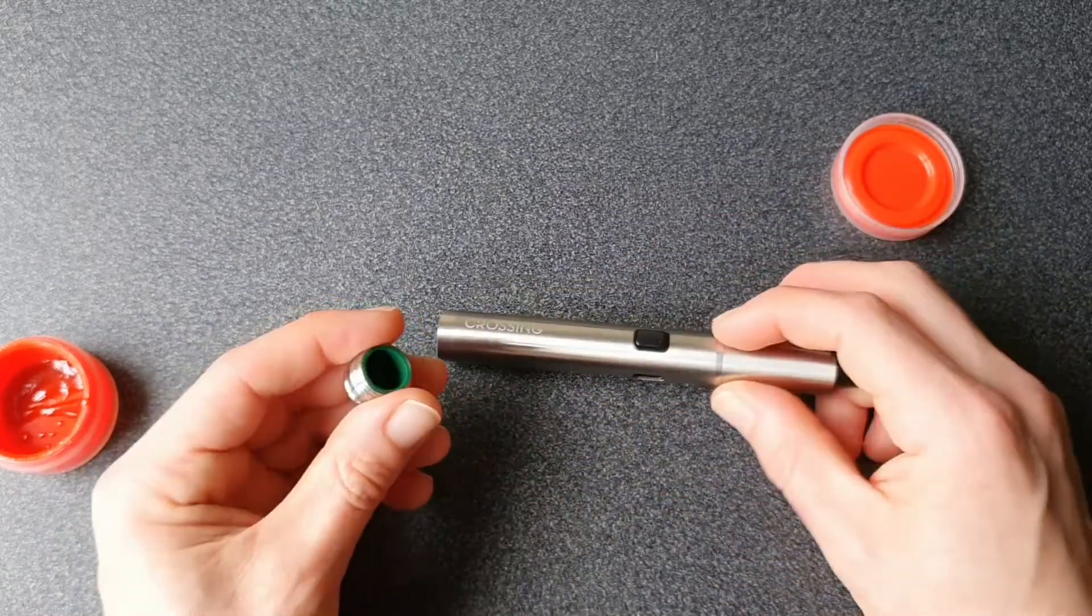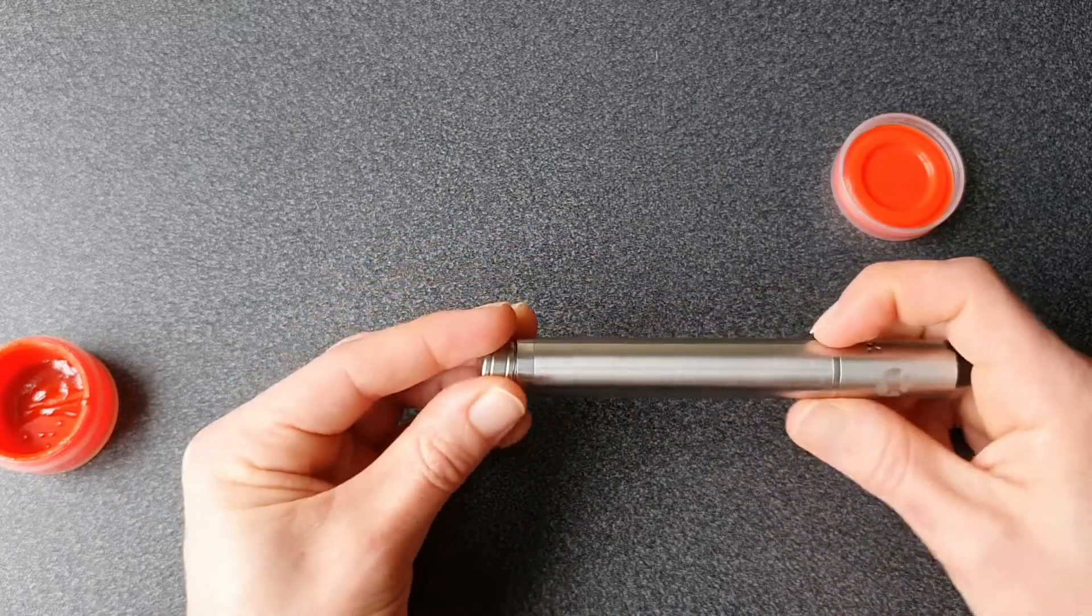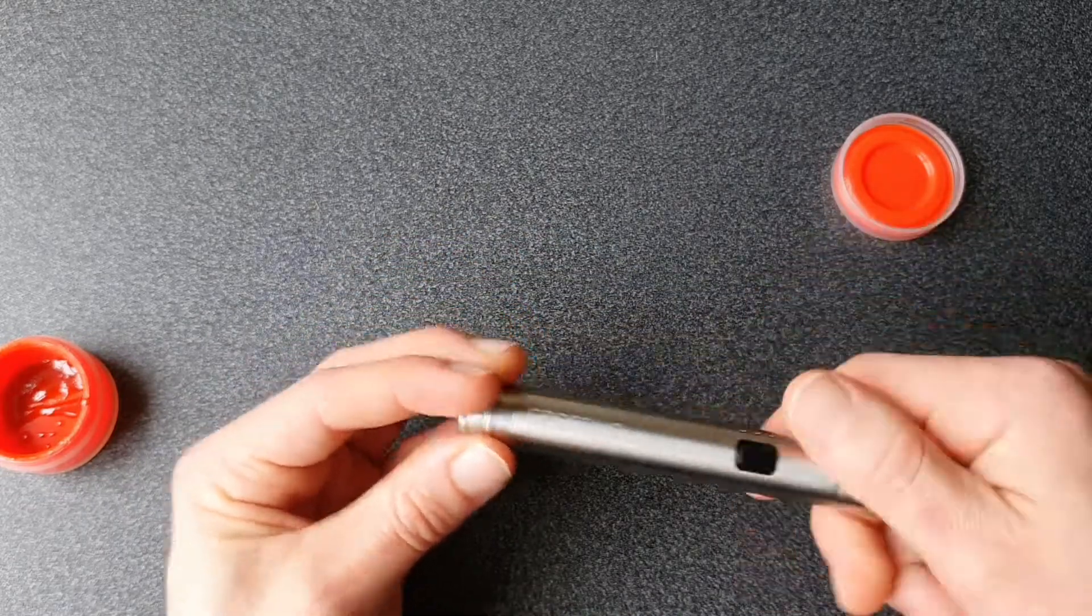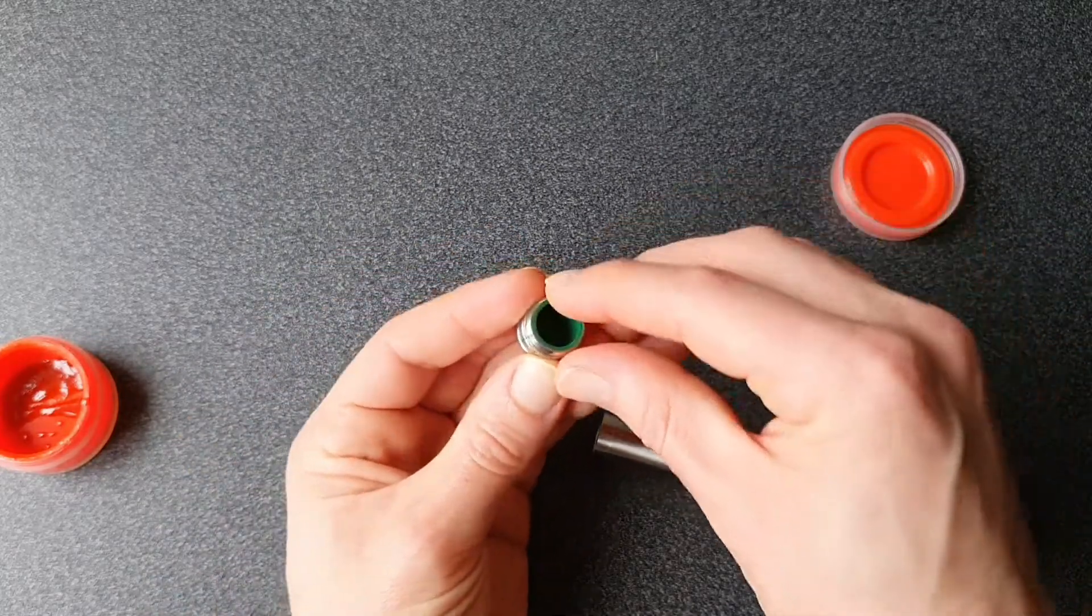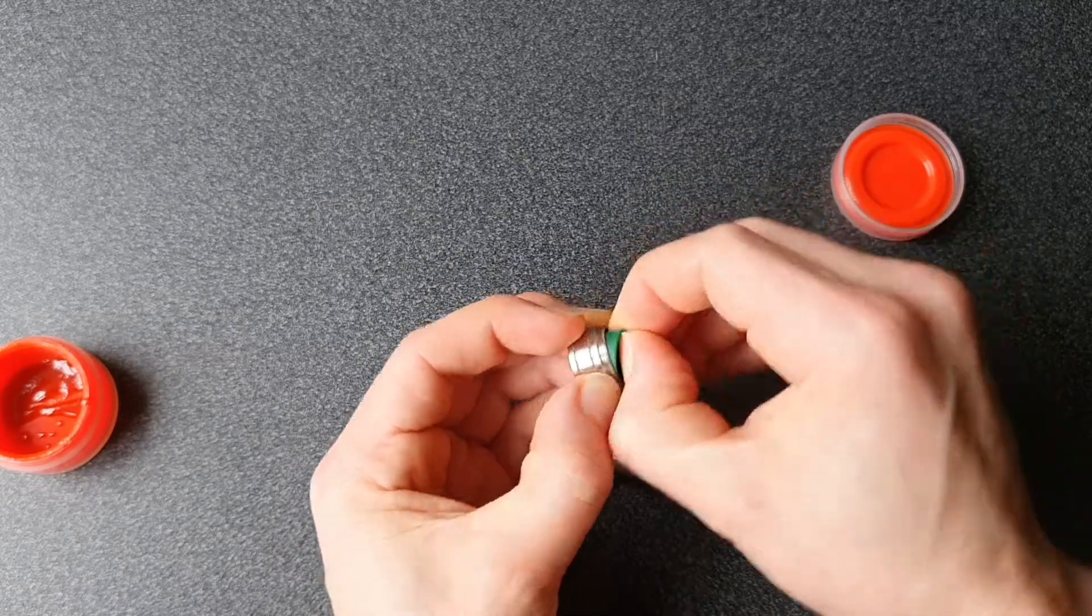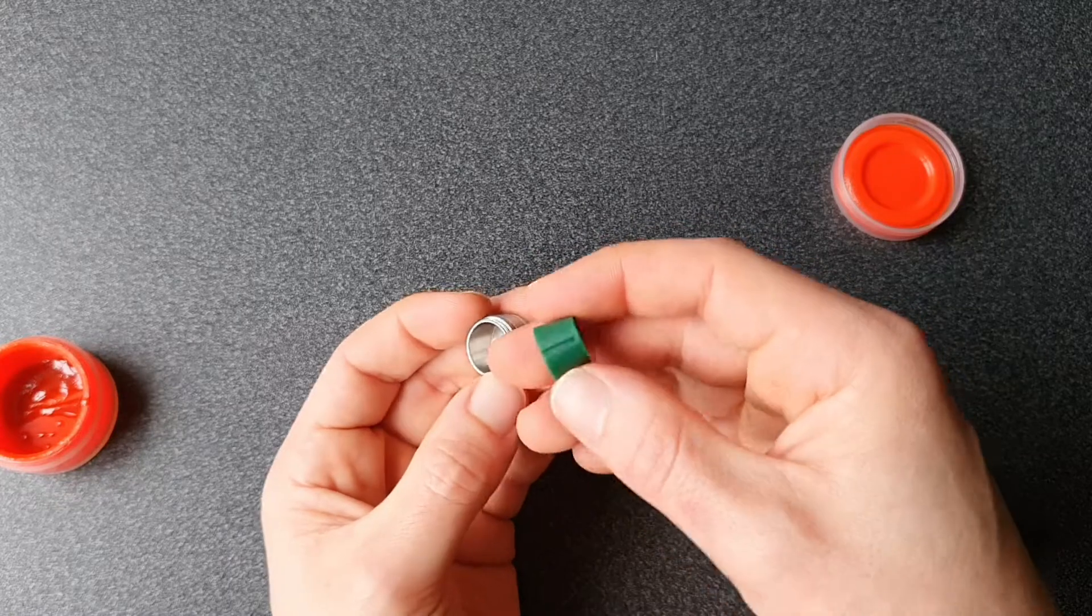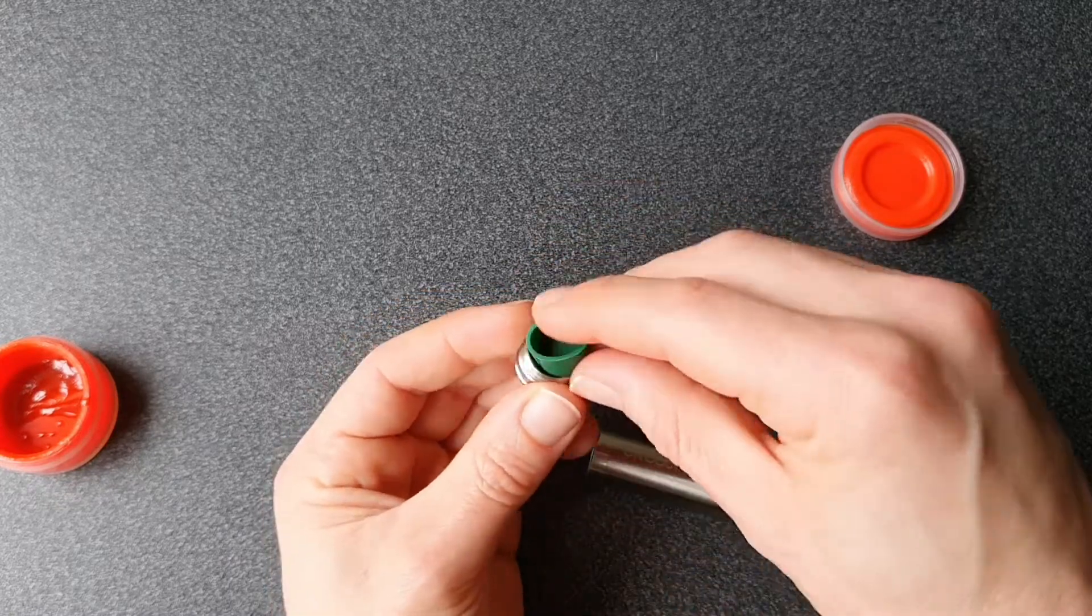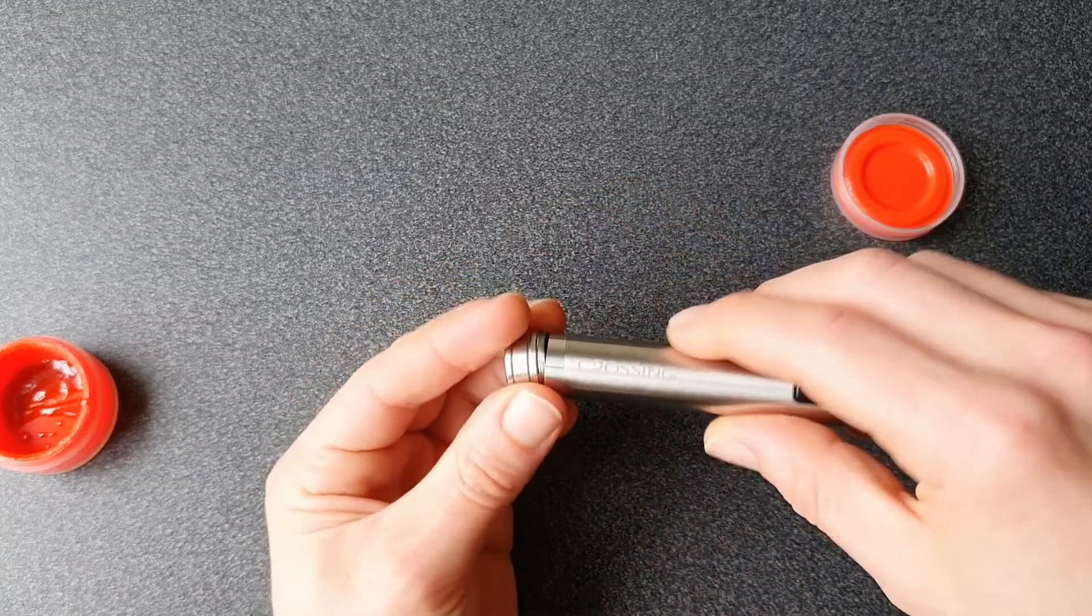Then we have storage. So we have replaceable removable storage which screws into the bottom of the pen and this also has removable silicon sleeves. They're a bit tricky to get out. I usually use tweezers. There we go. So if you damage these or mess them up you can just replace them. We have those in stock and they come with the top gasket which also comes out.